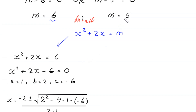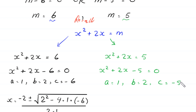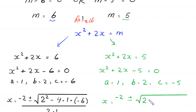Now when m is equal to 5, the equation becomes x squared plus 2x is equal to 5. Moving 5 to the left-hand side gives x squared plus 2x minus 5 is equal to 0. This quadratic equation is not factorable, so we solve it by the quadratic formula. In this equation, a is equal to 1, b is equal to 2, and c is equal to negative 5.